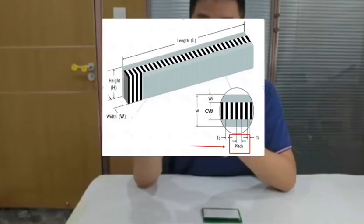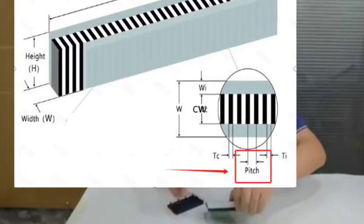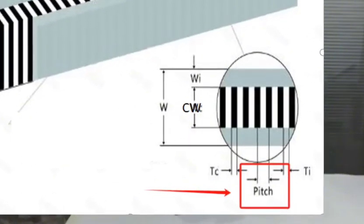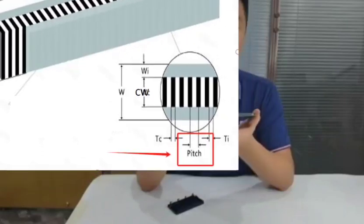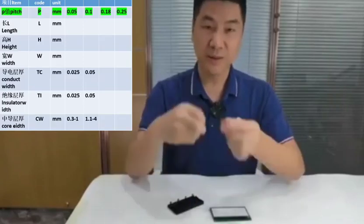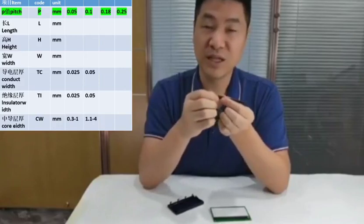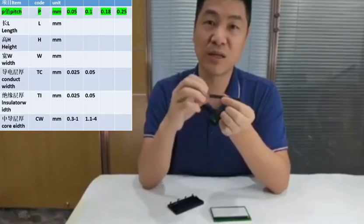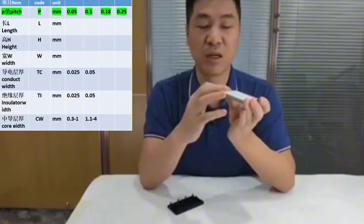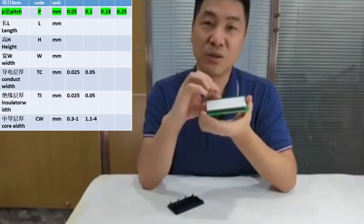Next, let's talk about the pitch of the Zebra connector. The standard pitch is 0.1mm, which is invisible to the naked eye. For a pin width greater than 0.4mm, a pitch of 0.1mm is recommended — having the pin touch at least four conductive layers is acceptable. For a pin width less than 0.4mm, a pitch of 0.05mm is recommended for a better safety margin. The minimum pitch we offer is 0.05mm.